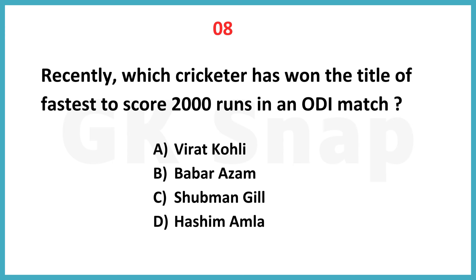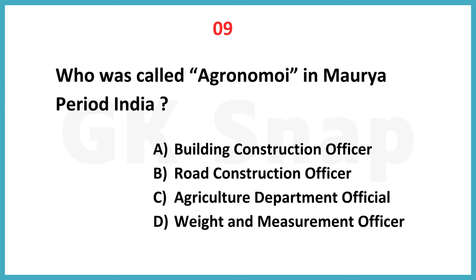Which cricketer has won the title of fastest to score 2,000 runs in an ODI match? Correct answer is option C: Shubman Gill. Who was called agronomoi in Maurya period India?